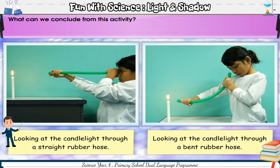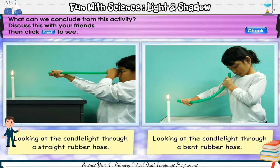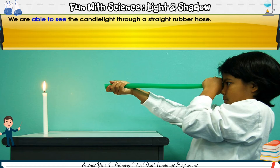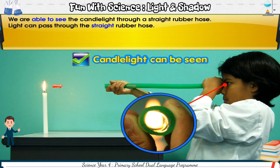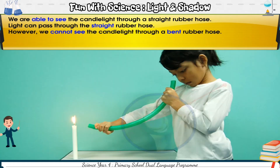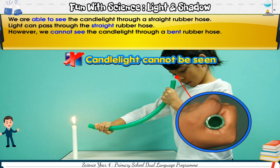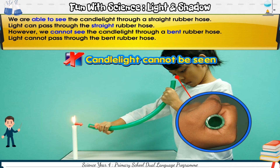What can we conclude from this activity? Discuss this with your friends, then click check to see. We are able to see the candle light through a straight rubber hose — light can pass through the straight rubber hose. Light cannot pass through the bent rubber hose.